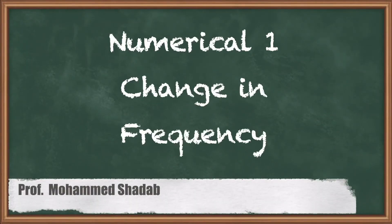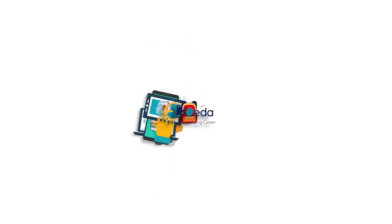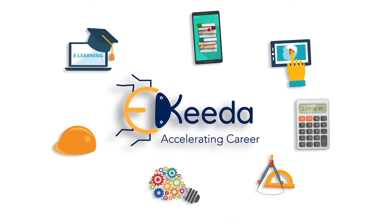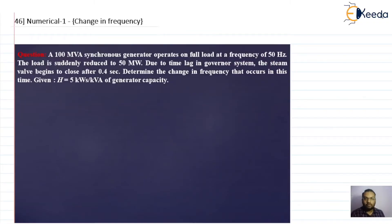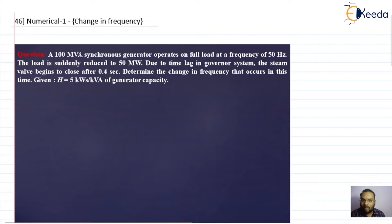In this video lecture, let us solve a numerical on change in frequency related to load frequency control for a single area. The question is: given a 100 MVA synchronous generator operating on full load at a frequency of 50 Hz, the load is suddenly reduced to 50 MW. Due to the time lag in the governor system, the steam valve begins to close in 0.4 seconds.